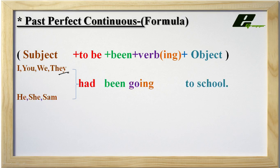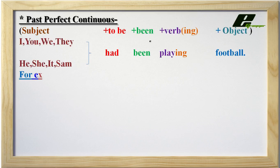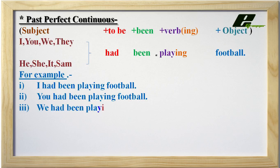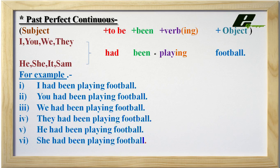Let's see some examples. They had been going to school — meaning they used to do this activity in the past for a certain period of time, but they do not do that activity in the present. For example: I had been playing football. You had been playing football. We had been playing football. They had been playing football. He had been playing football. She had been playing football. And Sam had been playing football. This means they were doing this activity in the past and are not doing it now.